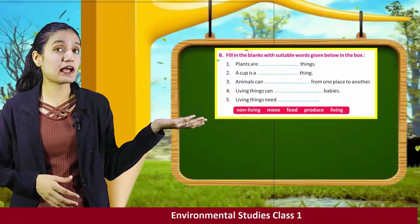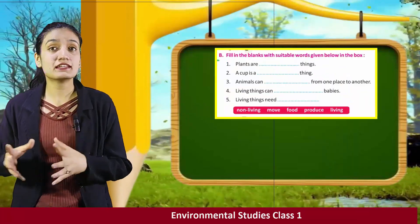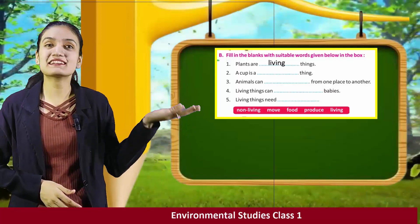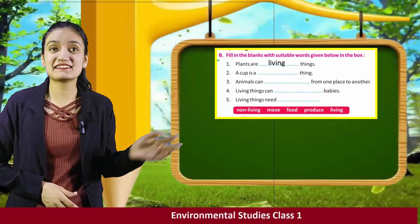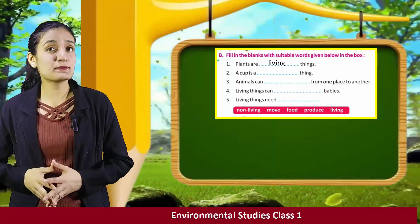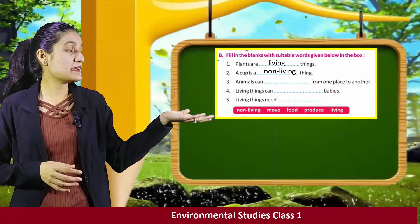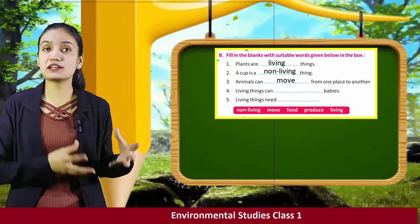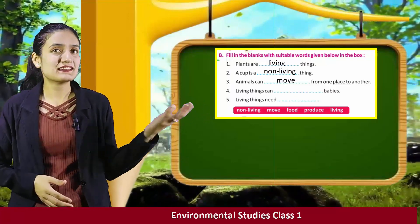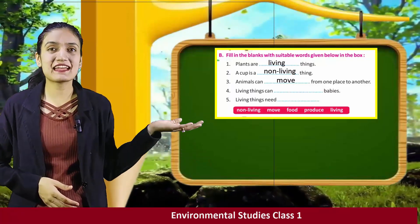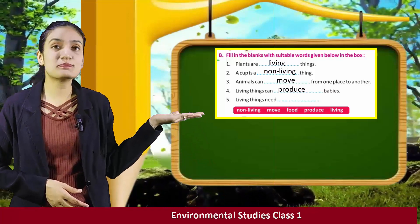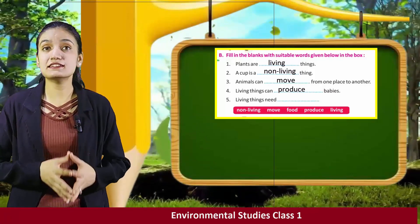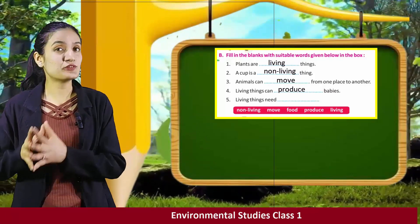B: fill in the blanks with suitable words given in the box below. Plants are living things. A cup is a non-living thing. Animals can move from one place to another. Living things can produce babies. Living things need food.